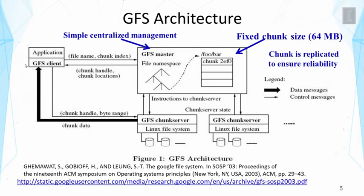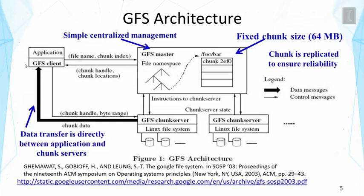When this file system stores files on machines, it creates fixed-size chunks. The data files are separated into many chunks, each 64 megabytes, which is appropriate for large data processing. These chunks are replicated to ensure reliability, and this is all taken care of by the file system. From the application perspective, the programmer sees this as a normal file and can invoke high-level operators to process it. Data transfer is directed between the application and chunk servers, making it efficient.